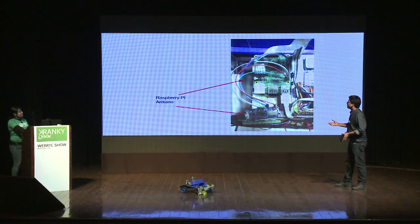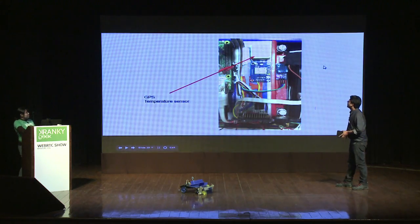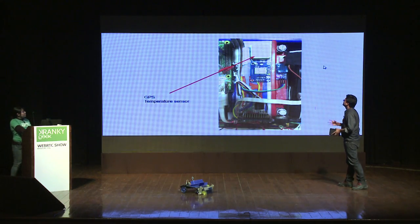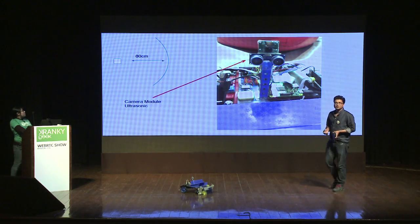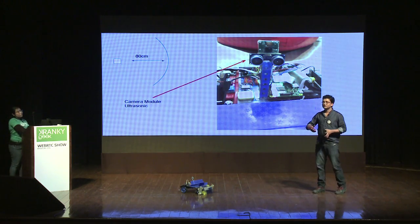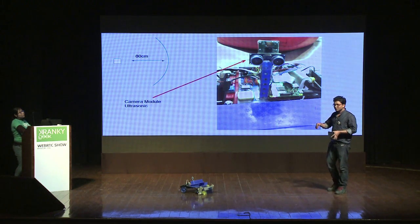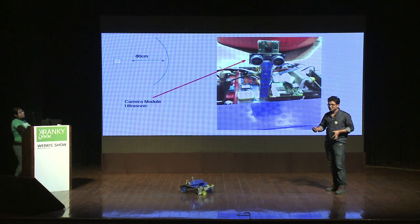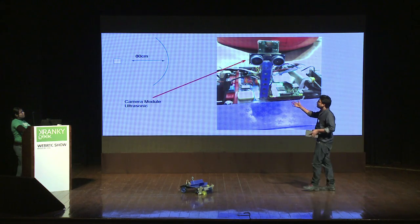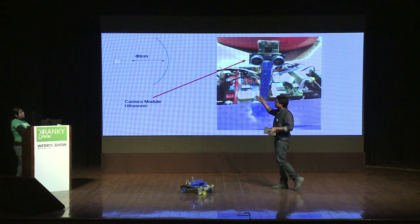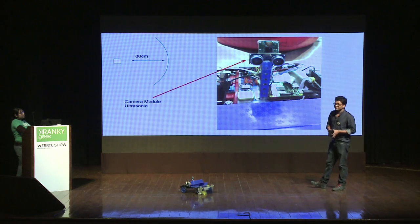The components include an RPi and Arduino board, a GPS system, a temperature sensor, and an ultrasonic sensor. To give the robot some intelligence, we put an ultrasonic sensor and set a distance threshold — if any hurdle comes within 80 centimeters, it will start giving signals and beeping.